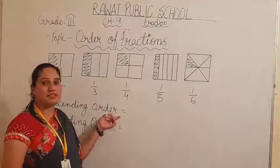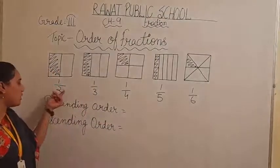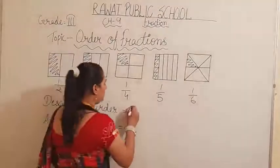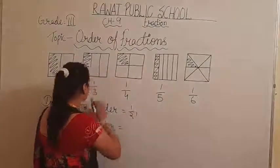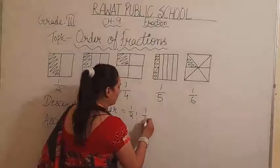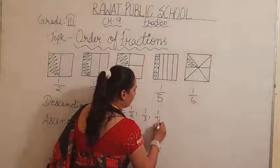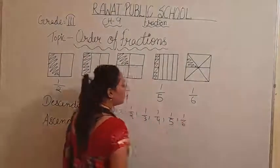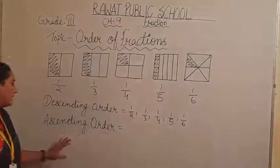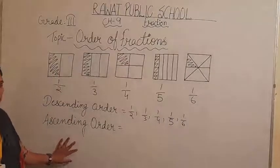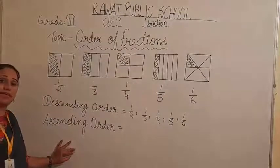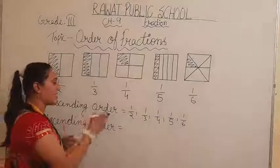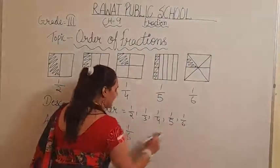When we put the fractions in descending order, we go from the smallest number to the biggest number. So what I have to write? I have to write 1 by 2 first, then 1 by 3, then 1 by 4, then 1 by 5, then 1 by 6.